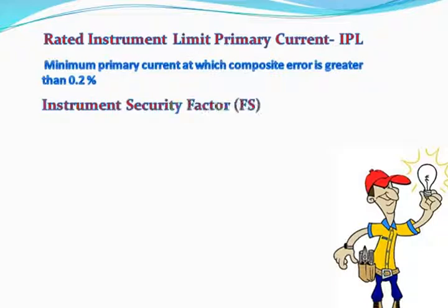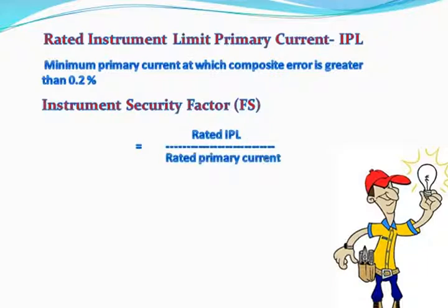Instrument security factor, or FS, is equal to rated IPL divided by rated primary current.